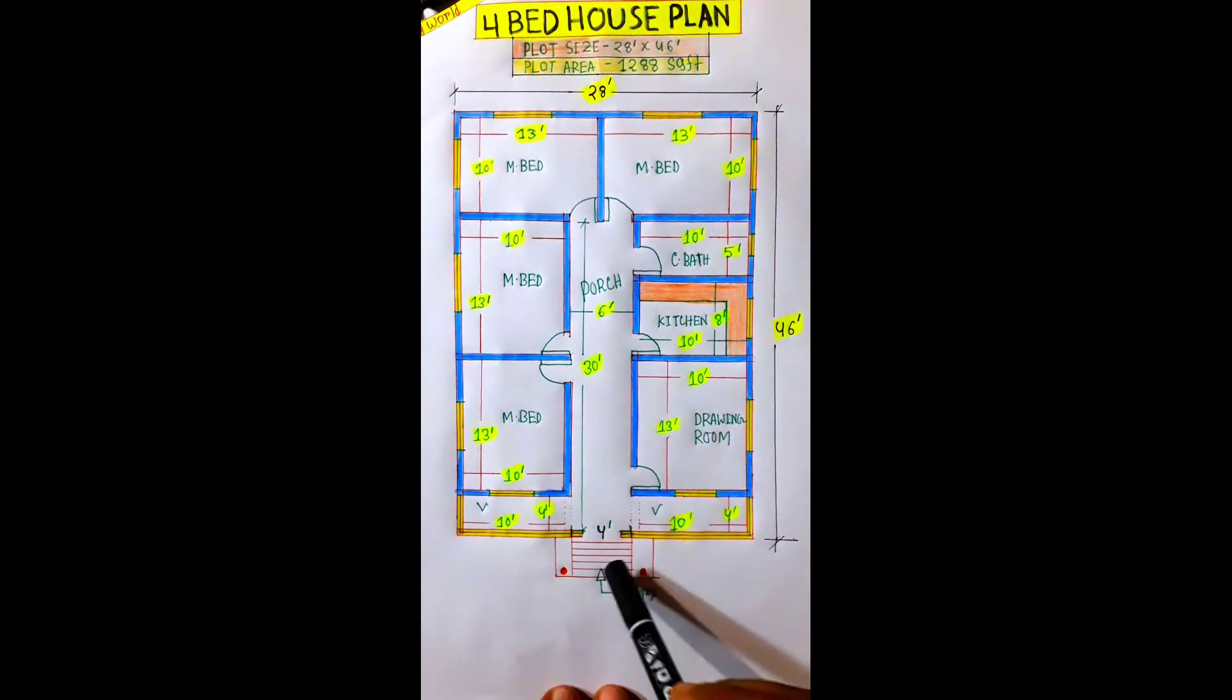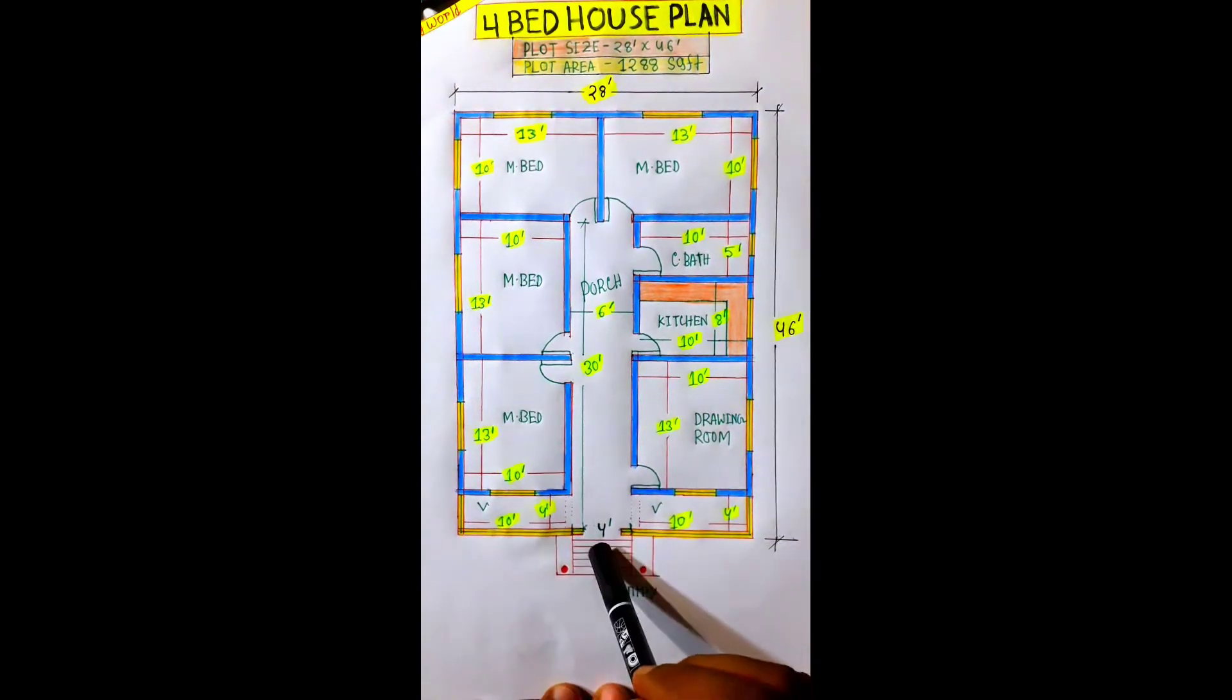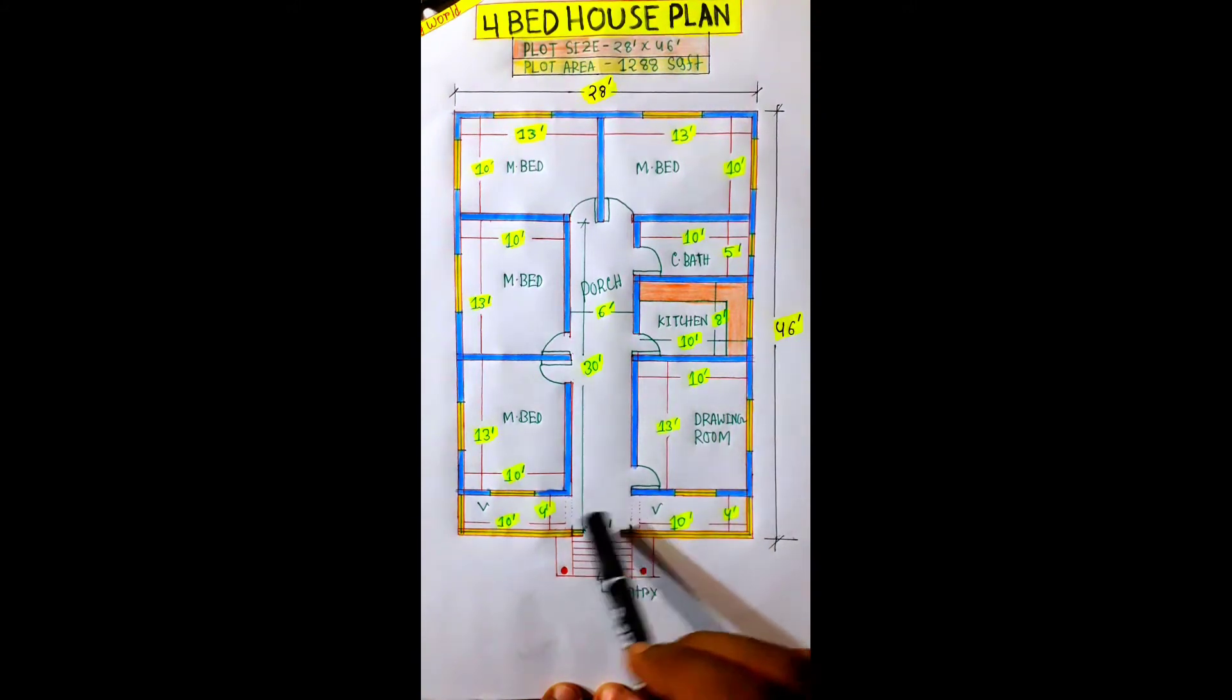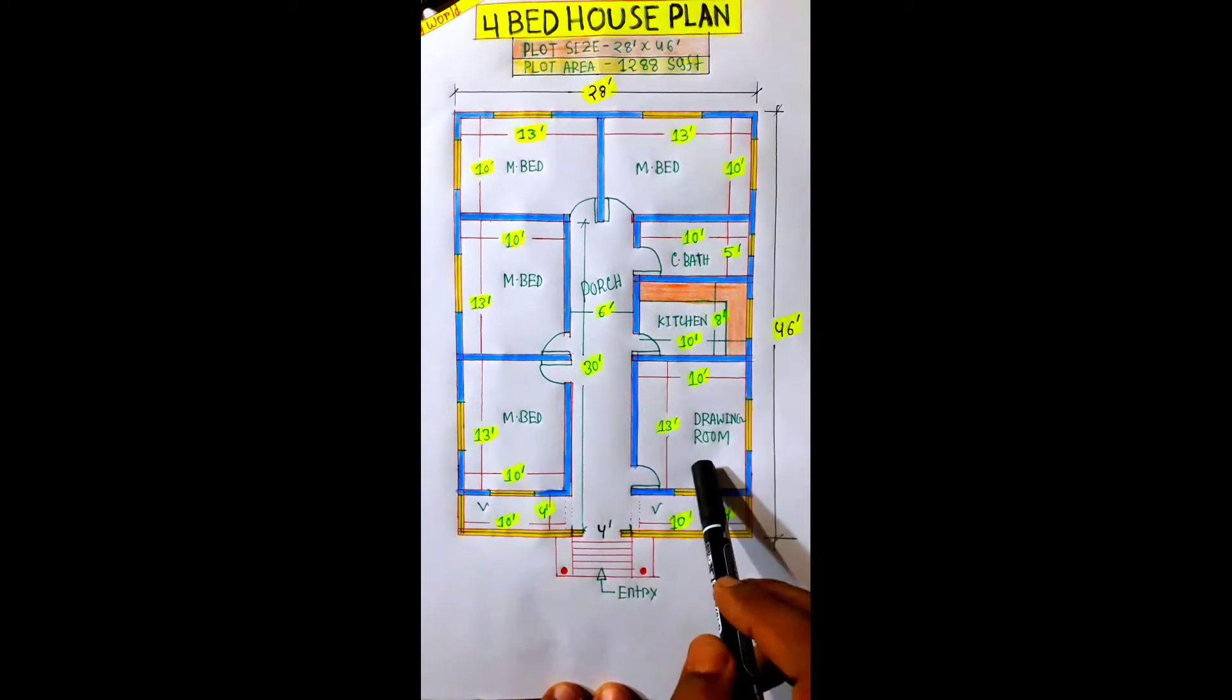So, this is the building entry. Here is 4 feet. We provide 10 feet by 4 feet, we provide a drawing room.